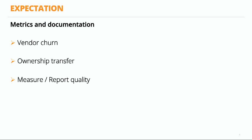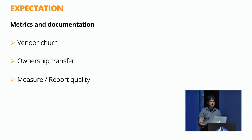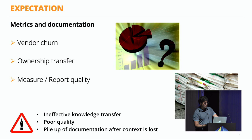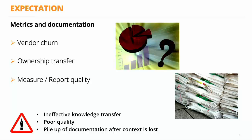The next expectation within enterprises is metrics and documentation. Large enterprises often have many vendors that build things for them and experience vendor churn, so there is always a risk of losing knowledge. There is a lot of emphasis on documentation, and enterprises like to transfer ownership to themselves once ready. There are always KPIs linked to quality, and it's important that we build the same quality metrics into our JavaScript code as we do for back-end server-side code. If we don't deal with this early, it results in a lot of risk and cost.